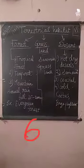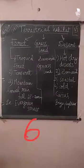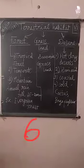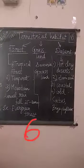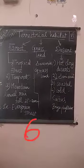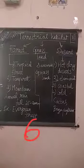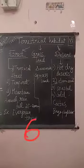Grasses range from short to tall. We can see grasses from short to tall. An example of this grassland is savannah grassland.